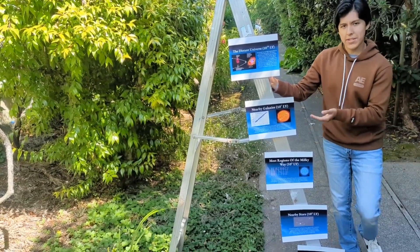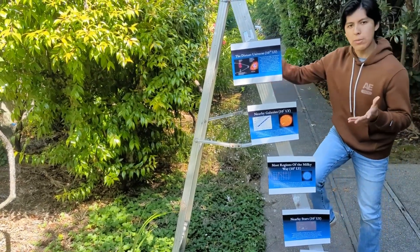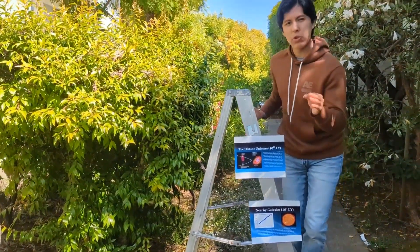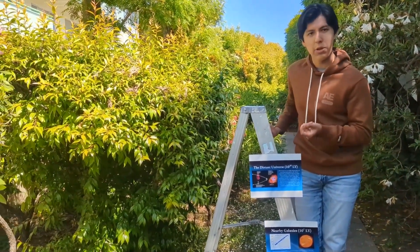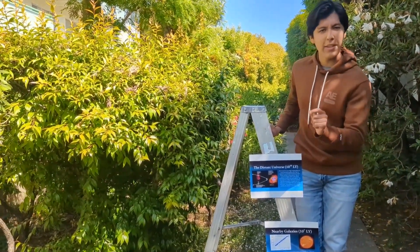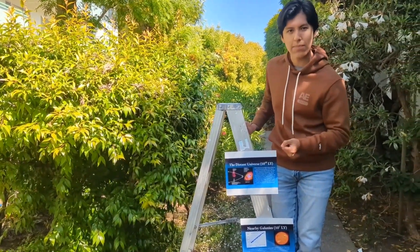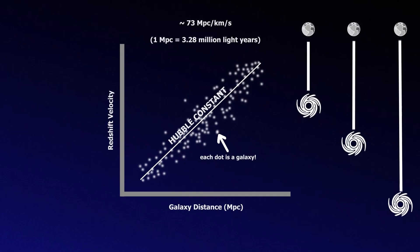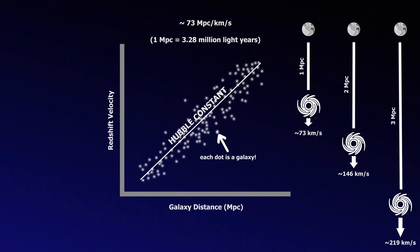Astronomers use these redshift measurements to calculate how fast these distant galaxies appear to be moving away from us. Next, astronomers climb the cosmic distance ladder, where they use distance measurements of objects that are progressively farther and farther away, as well as special types of supernovae called type 1a supernovae, to calculate the distance to these distant galaxies. Then they combine that data with their redshift measurements to get a Hubble constant of around 73 kilometers per second per megaparsec, meaning that galaxies one additional megaparsec away recede by an additional 73 kilometers each second.